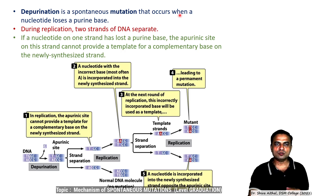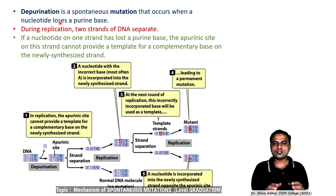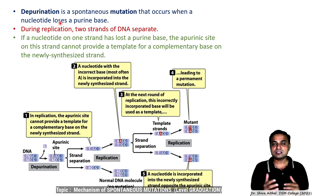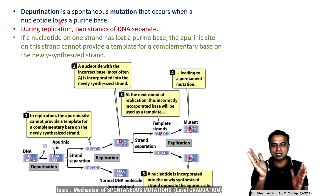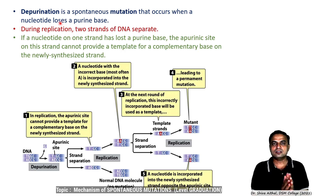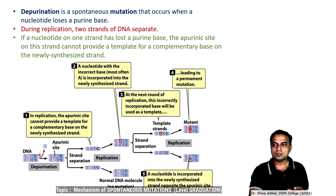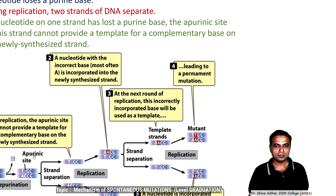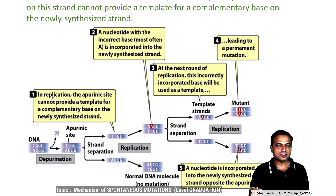Depurination is a spontaneous mutation that occurs when there is nucleotide loss. This happens during DNA replication. If one nucleotide on one strand has lost a purine base, this is called an apurinic site. An apurinic site on this strand cannot provide a template for a complementary base on the newly synthesized strand. You can see in the double-stranded DNA: T, G, G, C and its complement A, C, C, G. As the strand separates, suddenly G is lost — this becomes an apurinic site — T-gap-G-C.